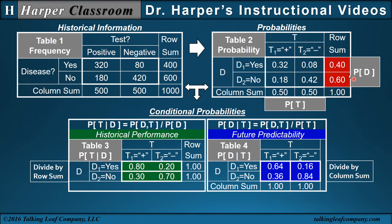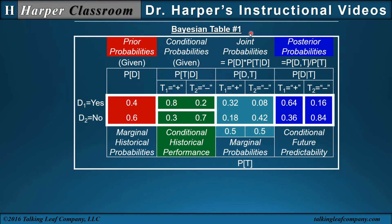Now consider the marginal probability — the probability of the disease. This is the probability that a subject has the disease before the test — the prior probability — and the probability after the test — the posterior probability. The relationship between these two involves the joint probabilities and the marginal probabilities. All these probabilities will be collected in a table called a Bayesian table.